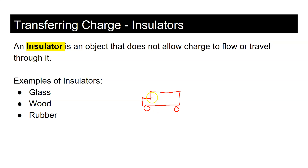A common misconception: people think that during a lightning storm, rubber tires protect you inside a car. That's incorrect — the rubber tires don't help at all when struck by lightning. What actually protects you is the metal body of the car. Electrons would rather travel through the metal than through you, because metal is a much easier path.